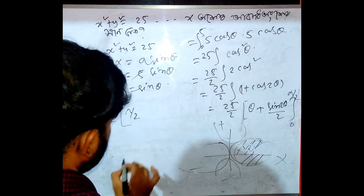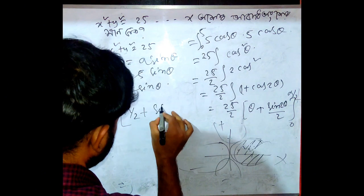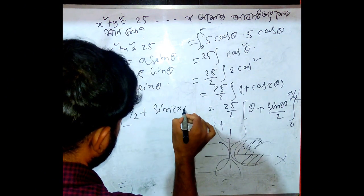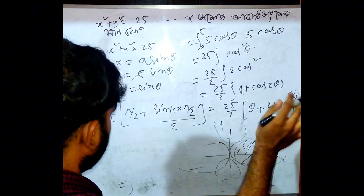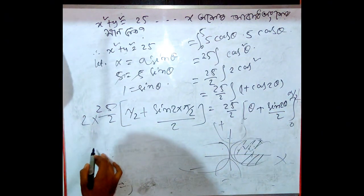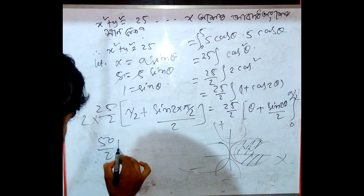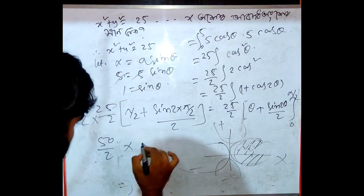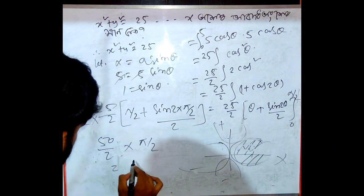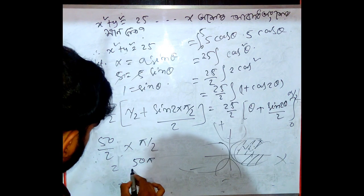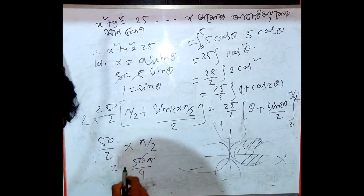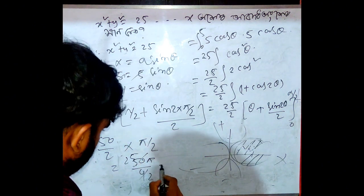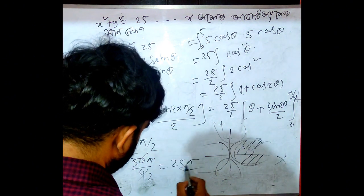So theta, pi by 2 plus sine 2 into pi by 2. 2, 0. Base ultimate data 0. Given pi by. Data total calculation. 5 by 2. Pi by. Do you have a couple of properties? What is 5 by 2?